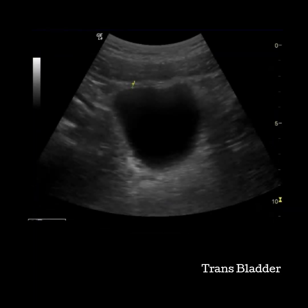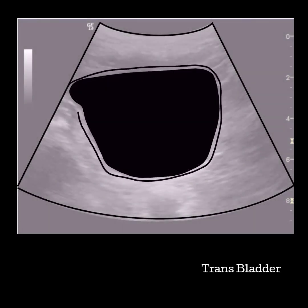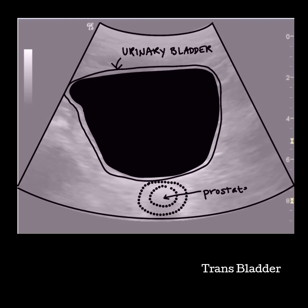If you need to measure the bladder wall, the transverse view offers a good window to measuring the anterior or lateral walls. The normal bladder wall should be less than three millimeters when the bladder is distended, but can measure up to six millimeters with partial distension. The transverse bladder usually takes on more of a square appearance when full and a little more rounded when partially full. An empty bladder can be difficult to see; however, using the prostate and the uterus as landmarks may be helpful.